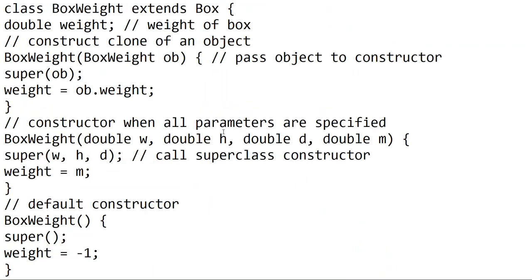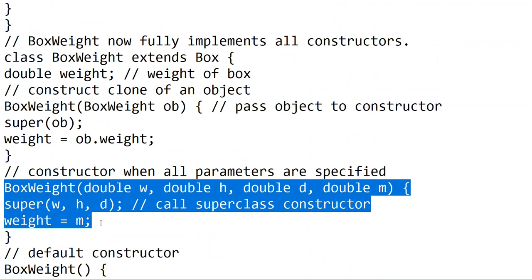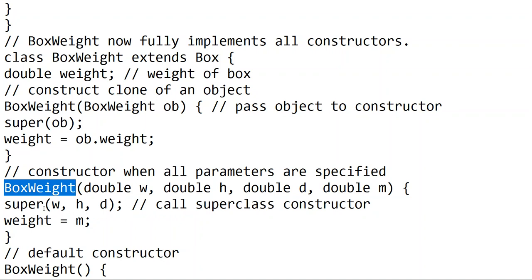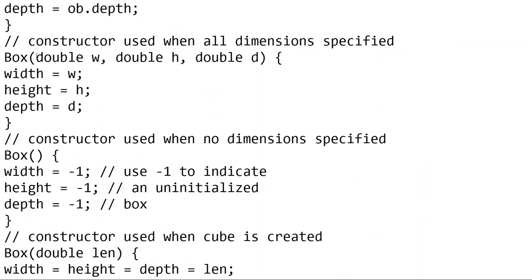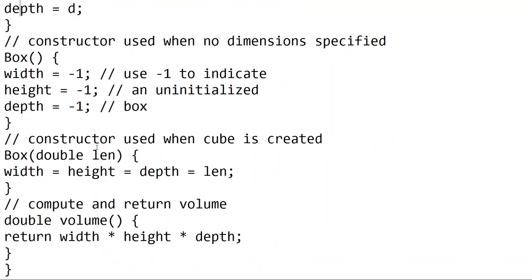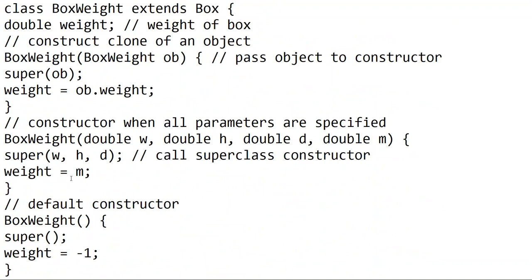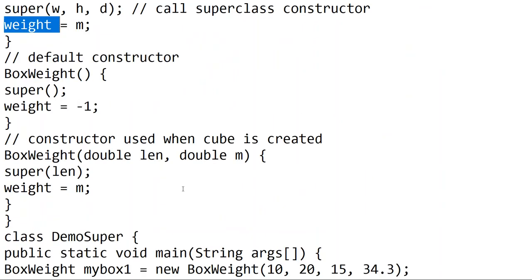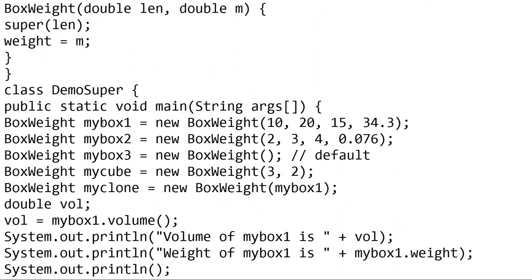Where is our BoxWeight constructor with four parameters? Here — this is the constructor of the BoxWeight class. It has four parameters. When we call super with width, height, and depth, this calls the super class constructor. Since we call the super class, the variables are set in the parent class.